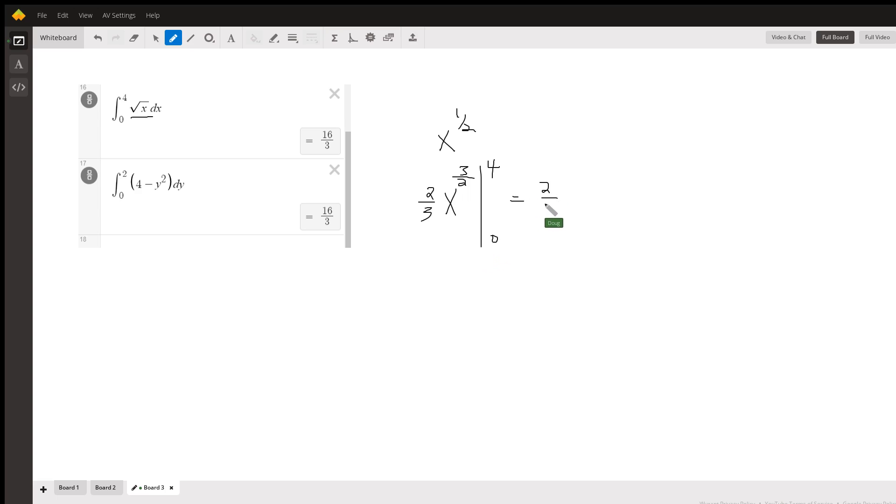Plug in 4 for x. 4 to the 3/2 is the square root of 4 cubed, which is 8. 8 times 2/3 equals 16/3.